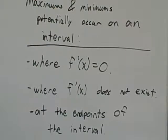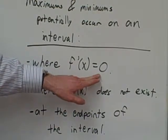Maximums and minimums can potentially occur on an interval in three different places. Where the derivative equals zero, which is the most common one.